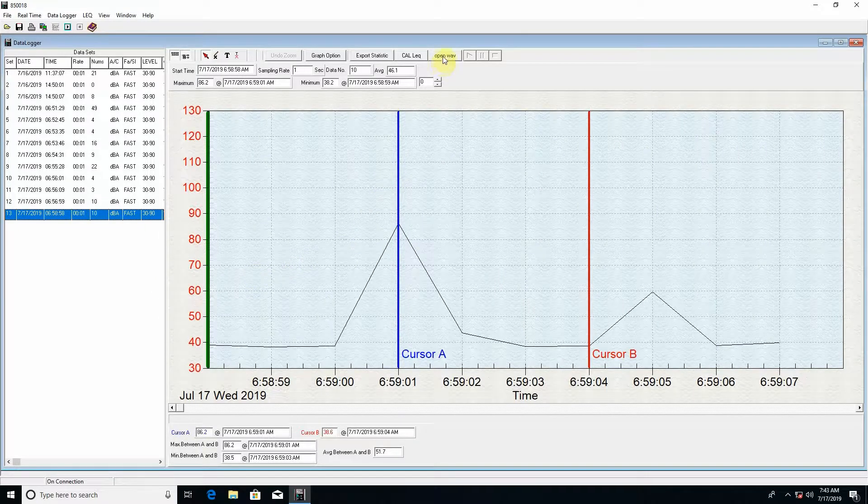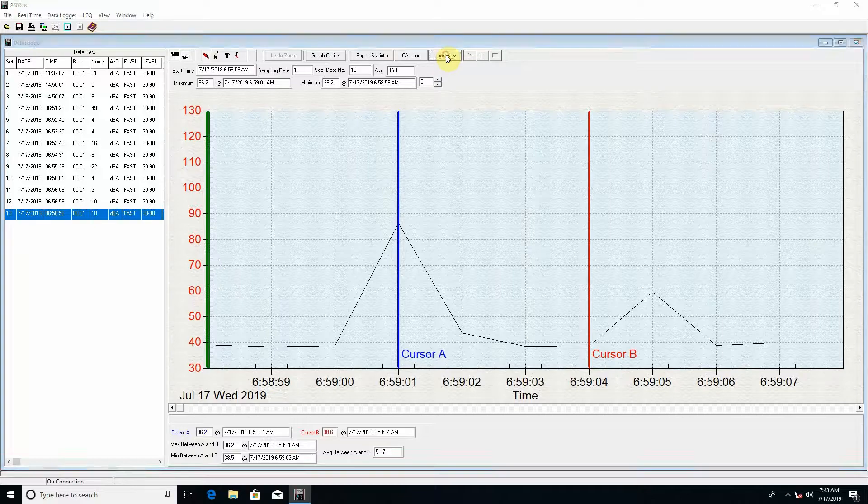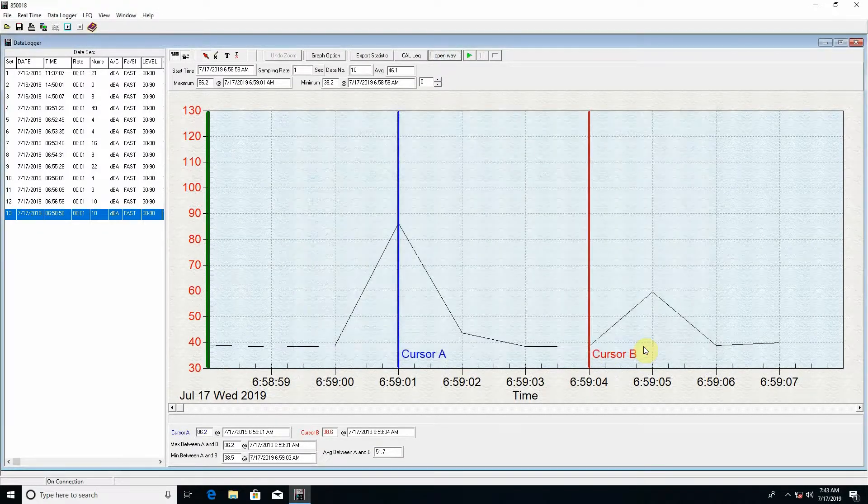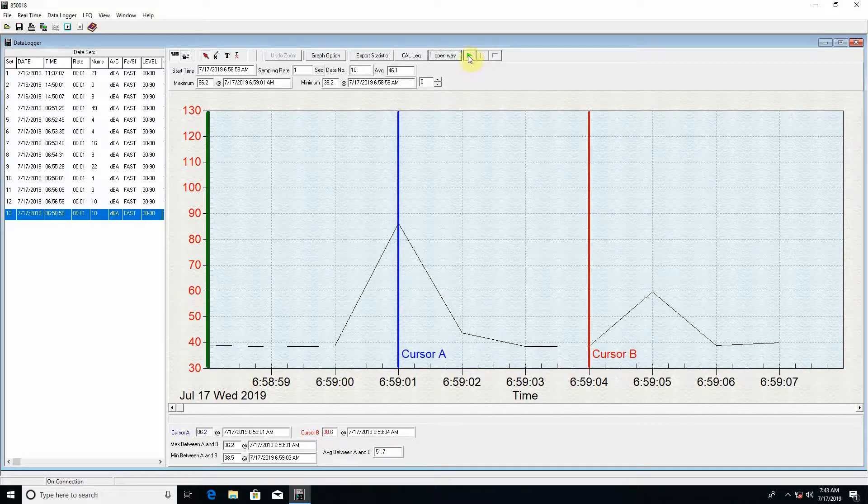And then to get the sound audio file, we'll go to open wave. Select the file, open. Now we can listen to it. We'll hit play.